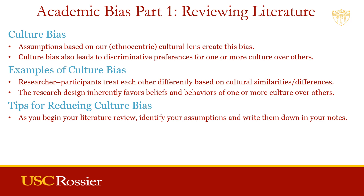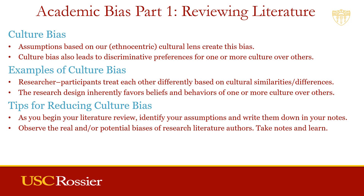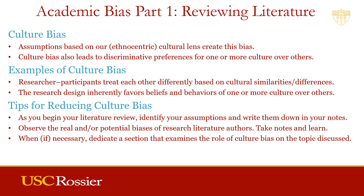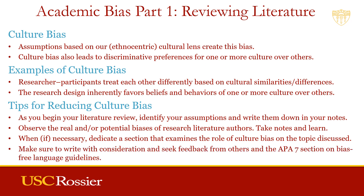Reflect upon these as you go. Notice others and improve your awareness and behavior. As you review the literature, you should pay attention to the real and perceived cultural and other biases found in the literature. Take notes and learn from them. When necessary, within your own writing, you could also dedicate a section early in the lit review to what you've learned and the importance of acknowledging bias and how it can be changed when it is addressed. Additionally, you'll want to write with consideration and seek feedback. The APA 7 section on bias-free language is helpful.